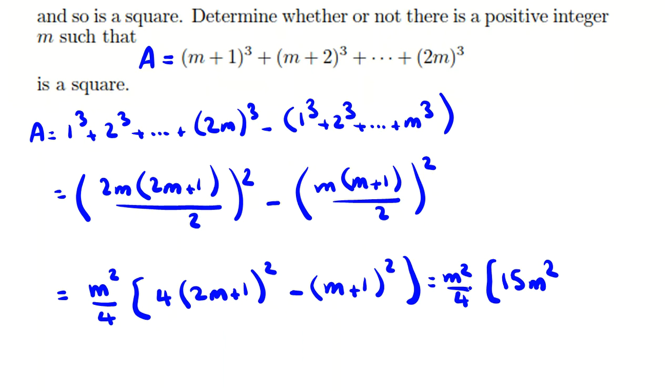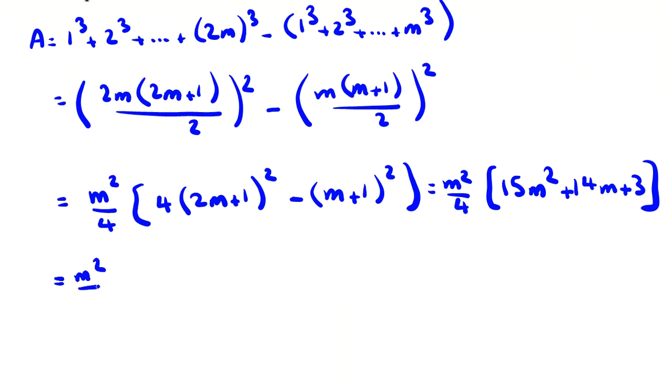It will be m² times (15m² + 16m + 4) over 4. We can factorize this term: 5m+3 times 3m+1. If we check, multiply one by three and one by one: 9m + 5m = 14m, so this is a perfect factorization.